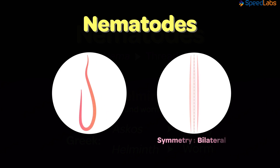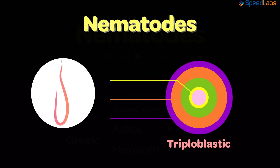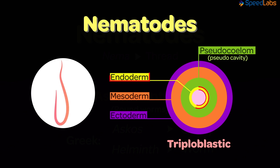Just like the Platyhelminthes, these are triploblastic. That means there are three embryonic layers – namely the endoderm, mesoderm, and the ectoderm – that make up the body. However, these contain a pseudocoelom, which means a pseudo cavity, or simply a cavity present between the gut and the body wall.